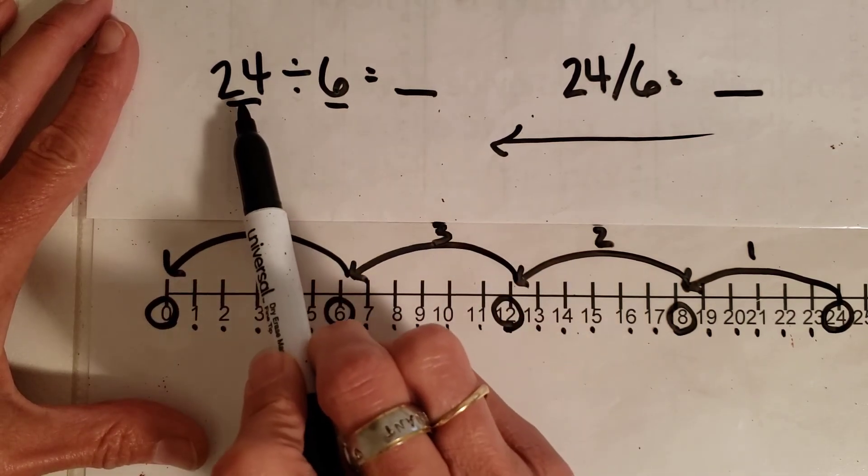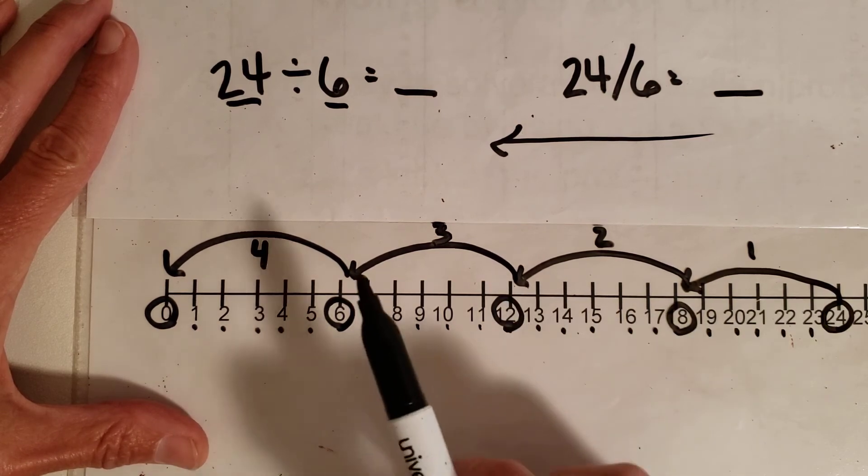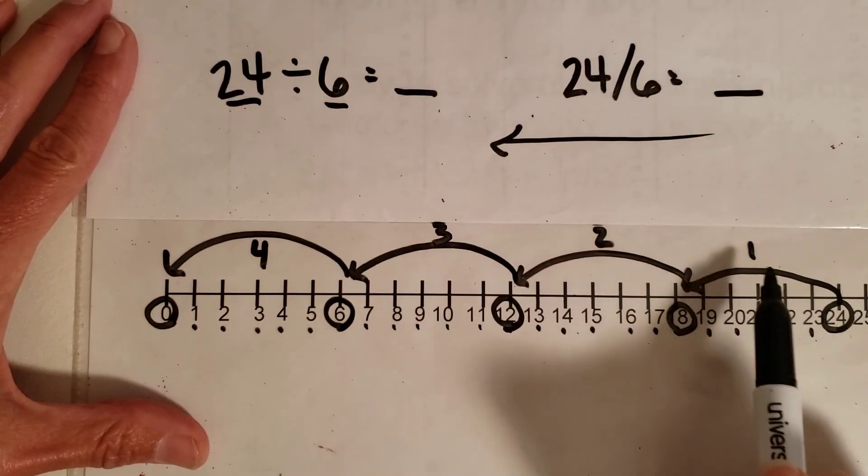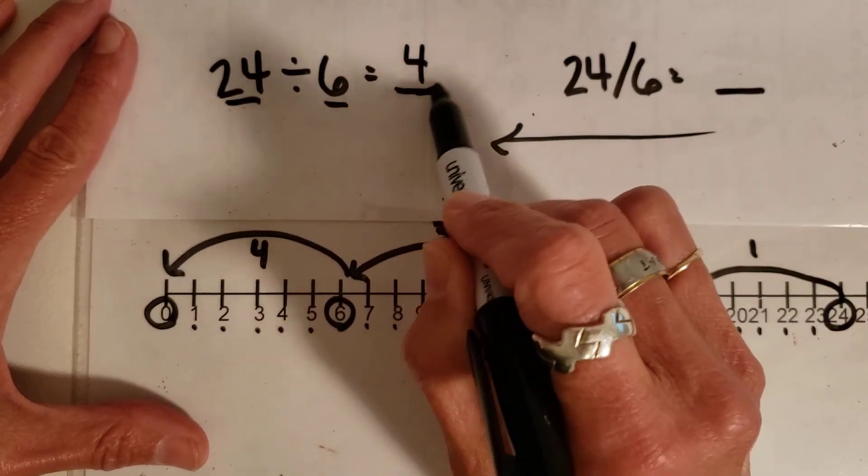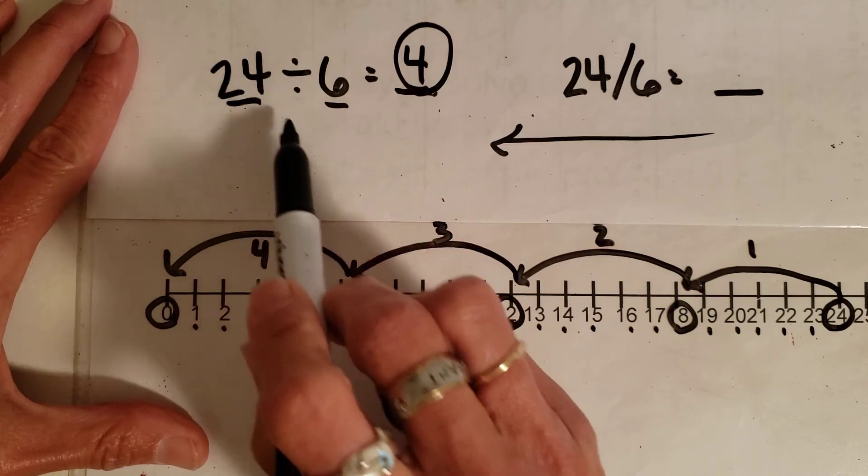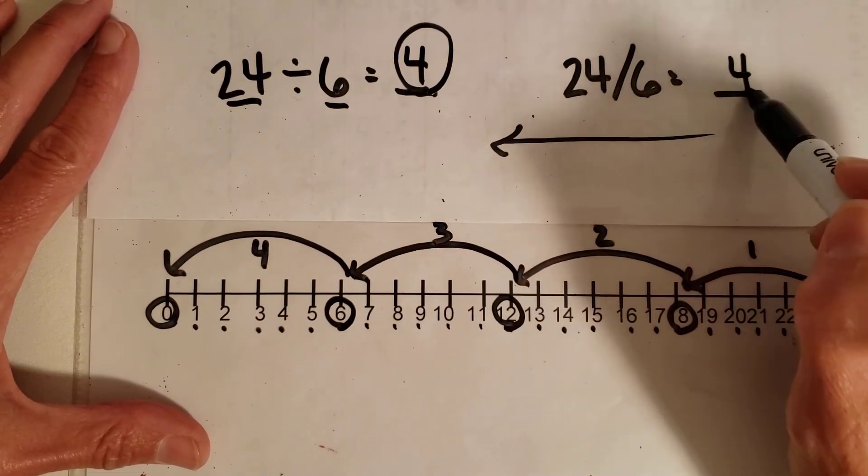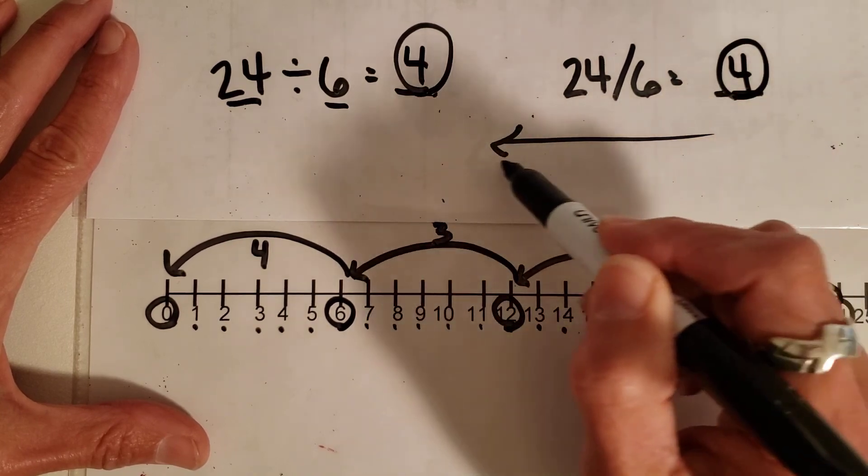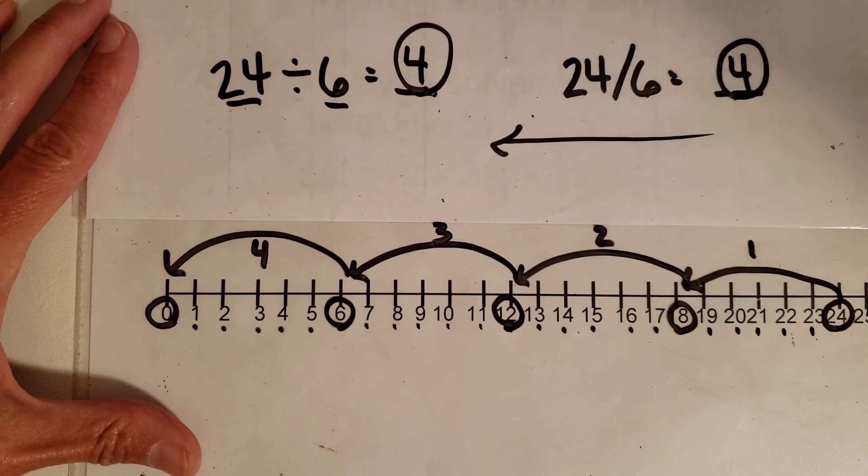So remember, I took the 24 and I went backwards 6 each time until I got to 0. And notice I went 1, 2, 3, 4. So my answer is going to be 24 divided by 6 equals 4. And remember, sometimes we see it written this way. It's still going to be equaling 4. And my goal is always to go back and try to get to 0. I hope you got this too.